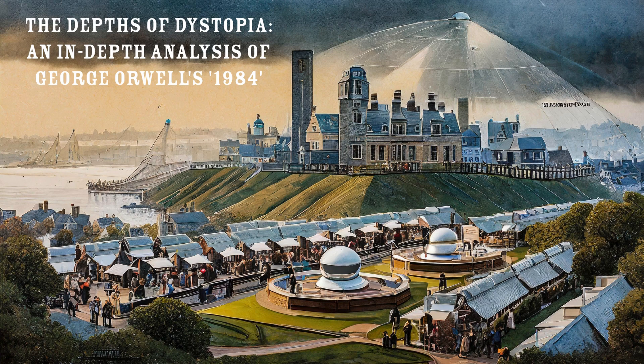Chapter 9. Winston's conversations with Julia about the party's atrocities and the fate of dissenters underscore the risks of rebellion in a totalitarian regime. Their pledge to support each other against the party's oppression underscores their defiance and solidarity. Orwell emphasizes the importance of human connection in resisting totalitarianism, showcasing the characters' unwavering commitment to fight for their beliefs despite dire consequences. This chapter sets the stage for the novel's dramatic climax as Winston's rebellion reaches its zenith.